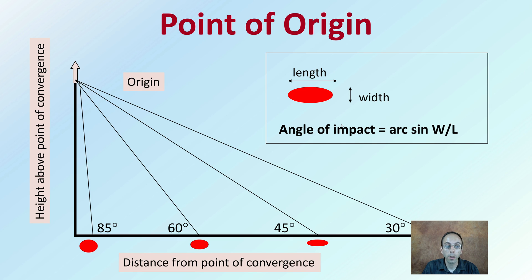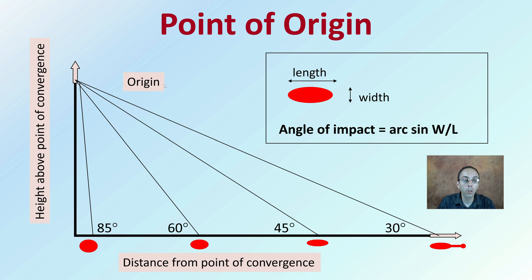The reason why this is important is when you're trying to determine that origin point, knowing the angle of those different blood drops can help trace back and determine the height above the point of convergence. So here we have the distance from the point of convergence and here we have the height. Being able to use this angle of impact with a string method can help determine that origin point, which can be very critical when trying to reconstruct a crime scene.